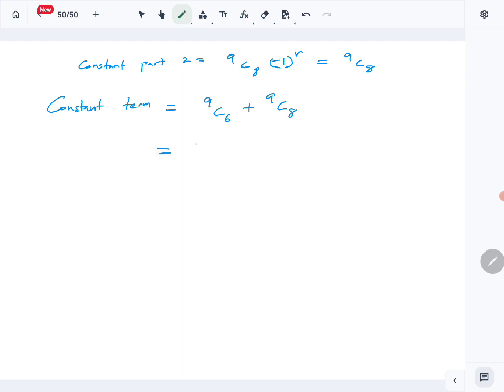So let's find these values. Factorial 9 over factorial 6 over factorial 3, factorial 9 over factorial 8 times factorial 1. So this becomes 9 times 8 times 7 over 3 times 2, this becomes 9. So this one 3, this one 4. 84, 84 plus 9 is 93. That is the required result, the constant term is 93.